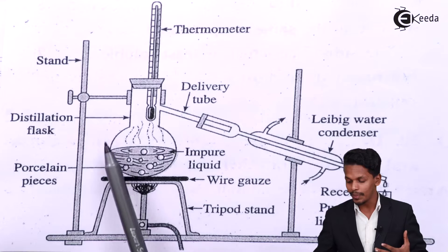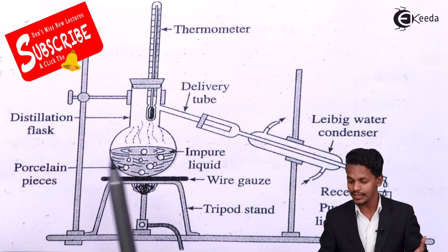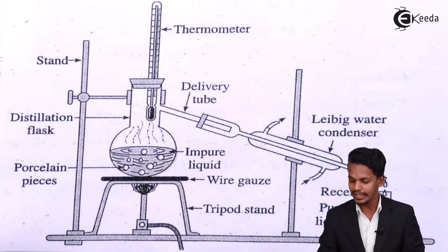This one consists of basically a round bottom flask as you could see over here, or that is also known as a distillation flask, and that is basically connected with the thermometer. What is the use of it? Let me talk about this later.